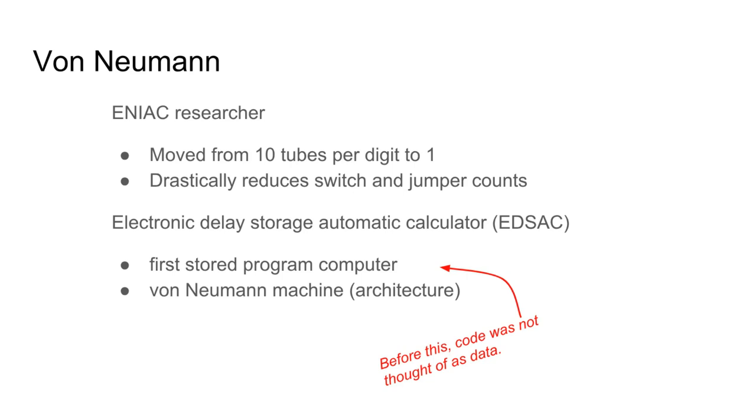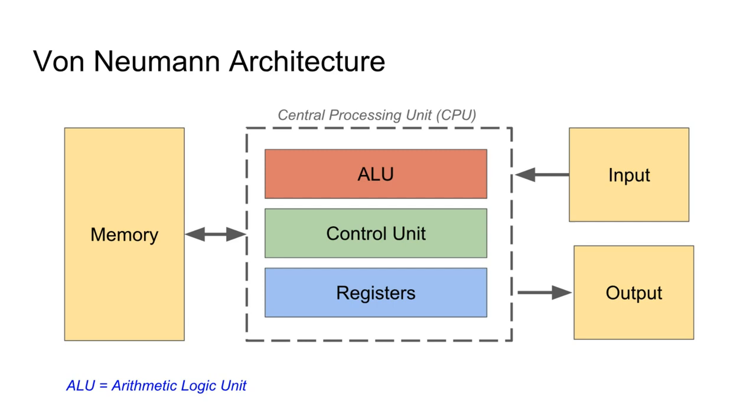We can't necessarily determine by looking at arbitrary bytes whether those bits are intended to be data or binary machine code for some instruction. Instead, we determine this by executing the code from some known starting location.